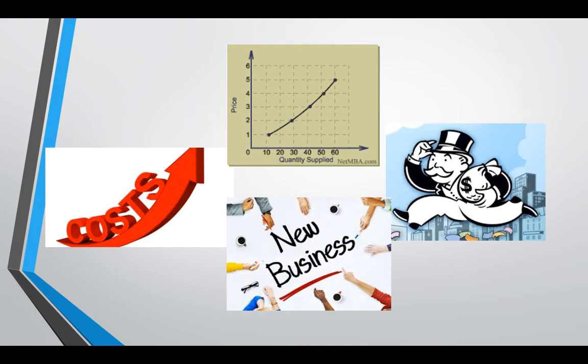If you can only charge a dollar for something, based on the opportunity cost of producing it, you're not willing and able to produce so many units. But with the same costs, if you can charge five dollars, you've just increased your profits by four dollars each. You are going to be willing and able to produce more. The profit motive means if nothing else changes and I can charge five dollars instead of one dollar, I'm going to — because my profits are going to increase.